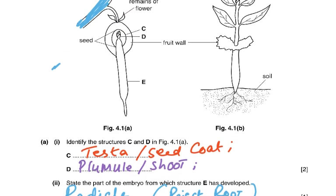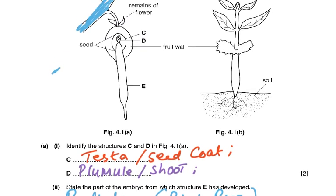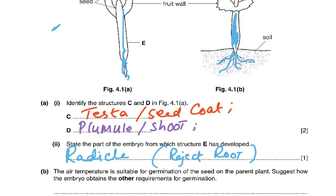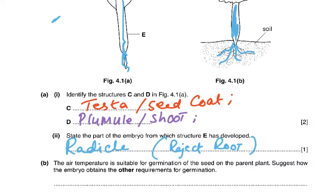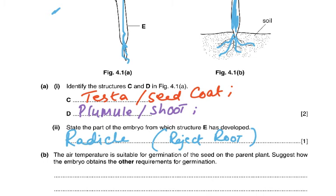Then it says: state the part of the embryo from which structure E has developed. Structure E developed from the radicle. In the seed: the radicle will develop into the root, and the plumule will develop into the shoot. The answer was radicle — if you wrote 'root' that was marked wrong, because the mark scheme rejects it. We're talking about the embryo stage, the part of the embryo when it was in the seed state.